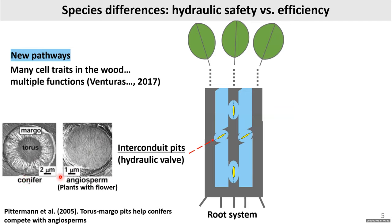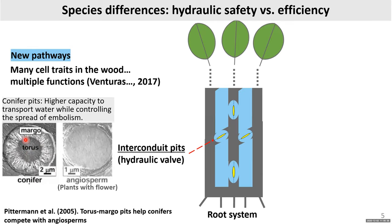Conifer pits are differentiated: the torus acts like a plug and the membrane is permeable. This gives conifers a higher capacity to transport water while controlling the spread of embolism. When a vessel becomes embolized, this plug shifts, blocking the passage of air and allowing the plant to bypass the embolized vessel, keeping water flow up to the leaves. It's a fantastic system.